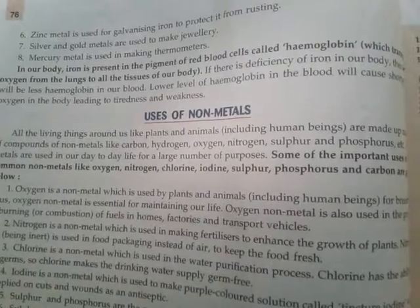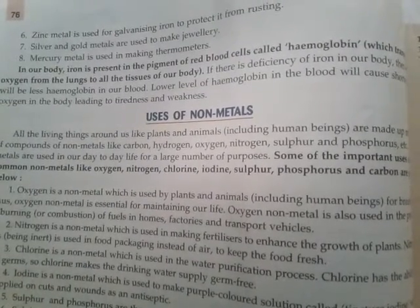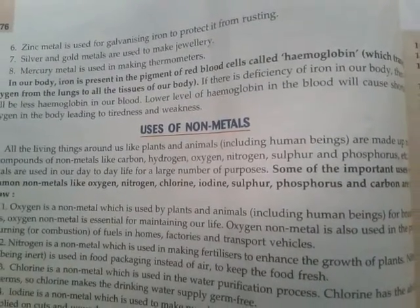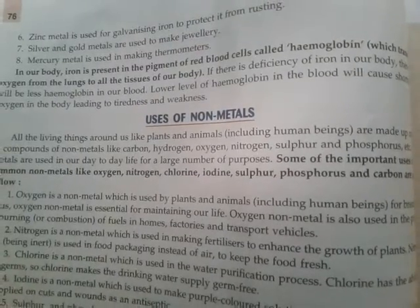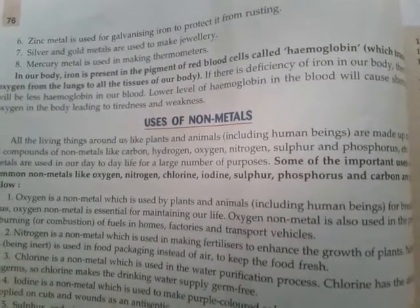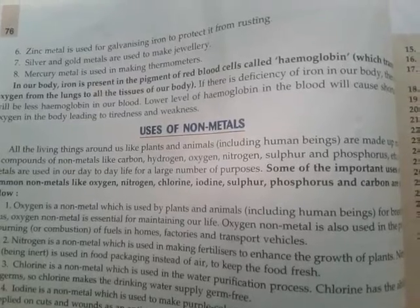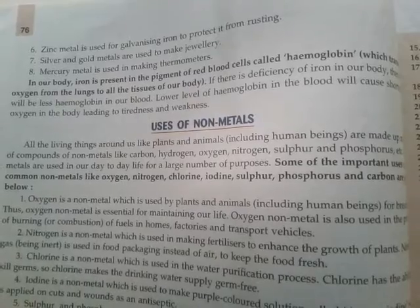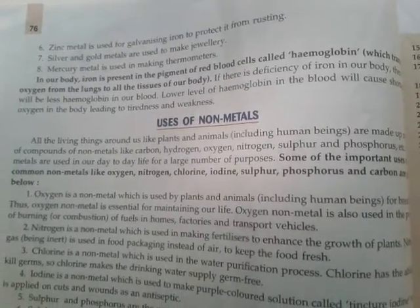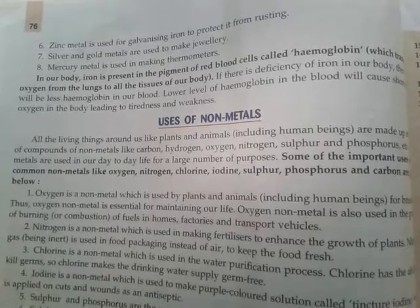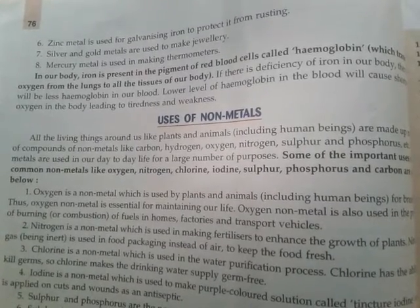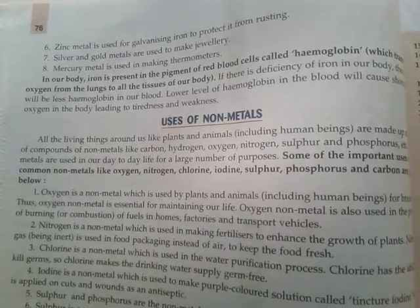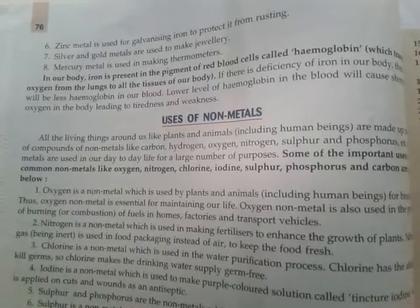Zinc is also an important metal for the galvanizing process, because it protects iron objects from rusting. Silver and gold metals are also used for making jewelry items. Mercury is a metal but it remains in liquid form at normal temperature, that's why it is used for making thermometers.